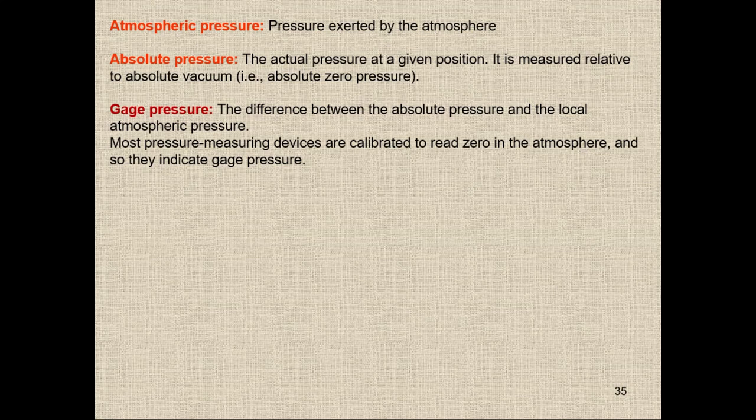Most pressure-measuring devices are calibrated to read zero in the atmosphere, so they indicate gauge pressure. For example, when filling CNG or air in car tires, the gauge reads zero when there is no gas — that is zero gauge, not zero absolute, because atmospheric pressure still exists. The actual pressure equals atmospheric pressure plus gauge pressure.